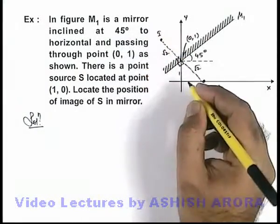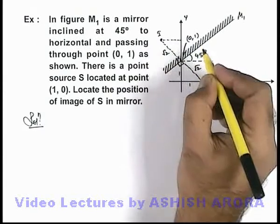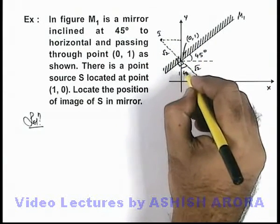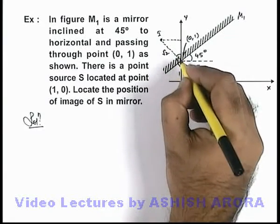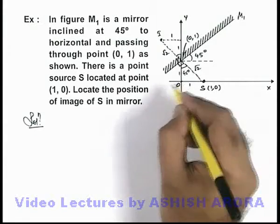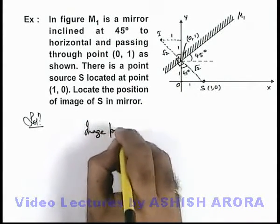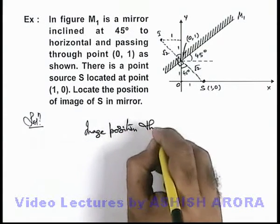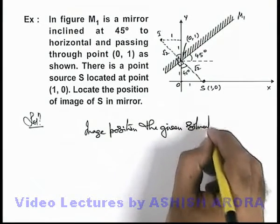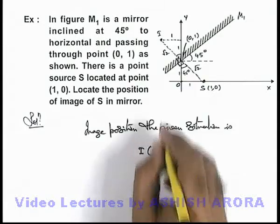So this will be the image. We can easily find out the location of the image and its coordinates using geometry. Since this distance is 1, this is 1, this angle is 45 degrees, and here if it is also 45 degrees, this will be 1 and this will also be 1. With the origin given, you can directly write the image position. You can directly see the coordinates of the image.